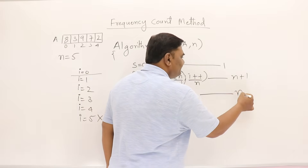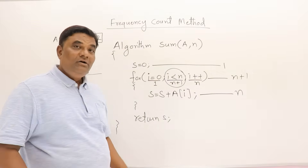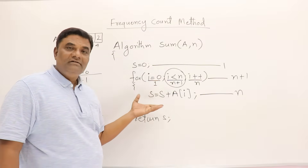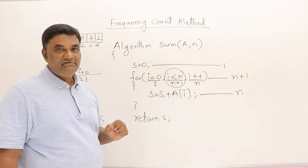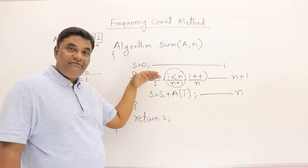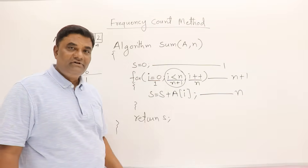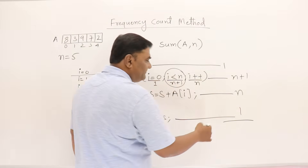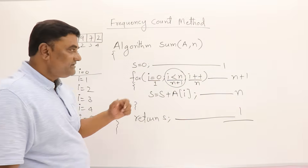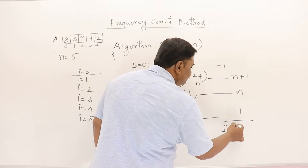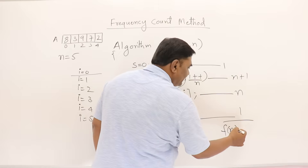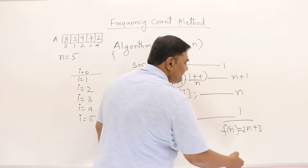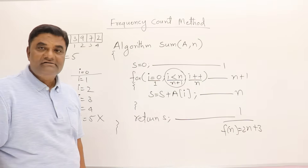Whatever is written inside a loop like this will execute n times, and the loop condition itself will execute n plus one times. The last statement executes one time. So the time function f(n) is: 1 (initialization) + n+1 (condition) + n (loop body) + 1 (last statement), giving us 2n + 2.